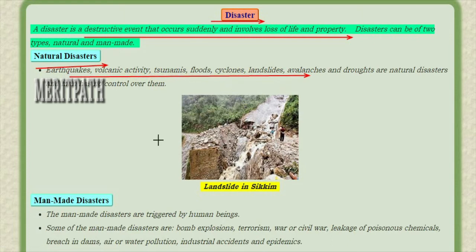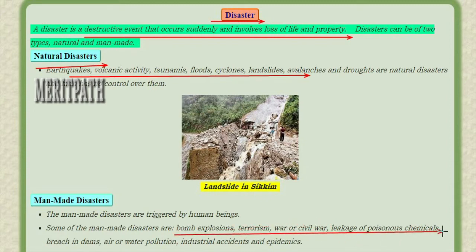Man-made disasters are triggered by human beings. Some of the man-made disasters are bomb explosions, terrorism, war or civil war, leakage of poisonous chemicals, gas leakages, breaching dams, air and water pollution, industrial accidents, etc. All this comes under man-made disasters.